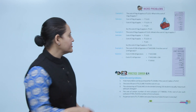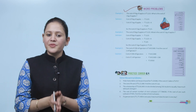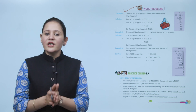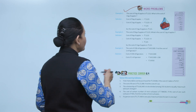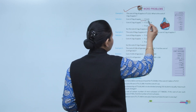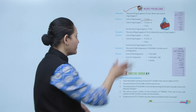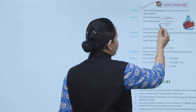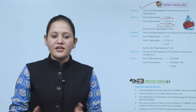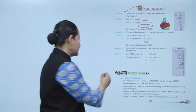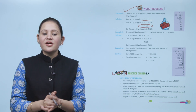Next are word problems. The cost of 9 kg of apples is rupees 1125. To find the cost of 1 kg, divide 1125 by 9. The answer is rupees 125 — that is the cost of 1 kg of apple.